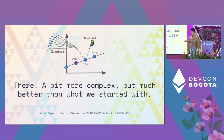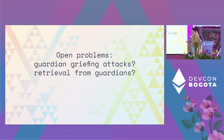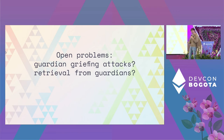There's a demo — check the link in the slides. If you don't like this solution, you can also just use a smart contract wallet with a message; not everything needs MPC. Some open problems: guardians can grief you during catastrophic loss by refusing to return shares unless you pay an exorbitant fee. There's also the question of how guardians should know when you've lost your key and need them to return shares.